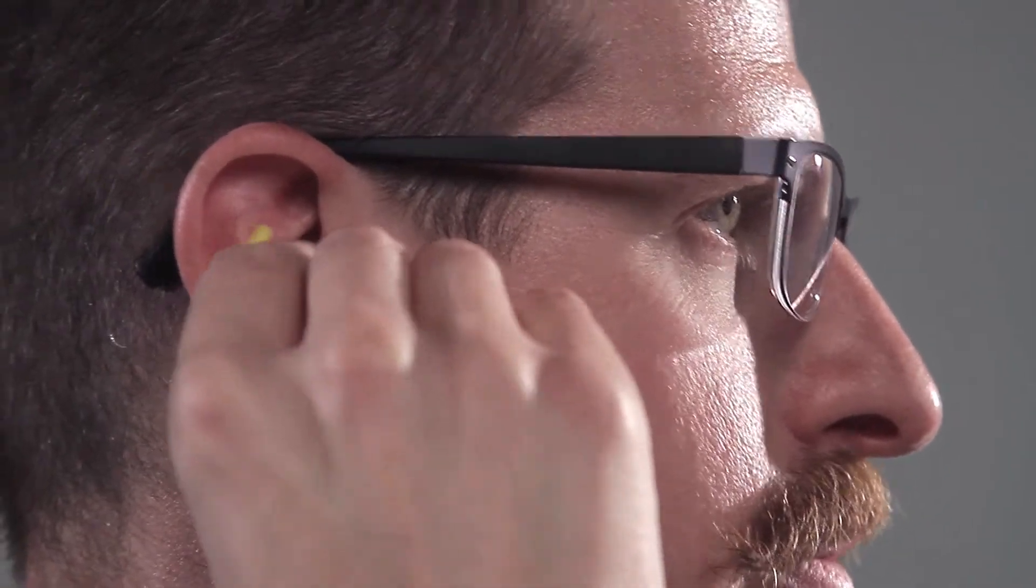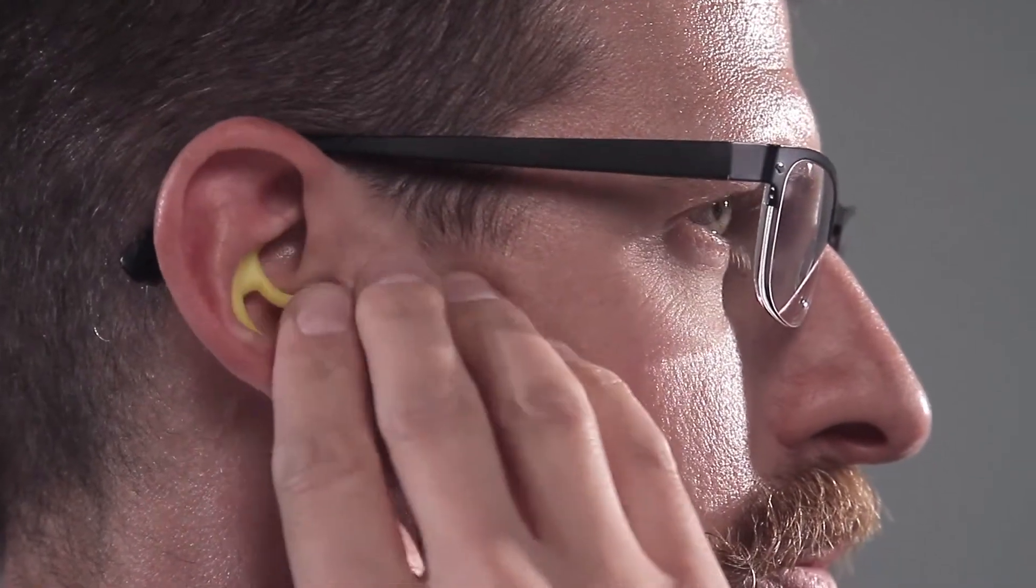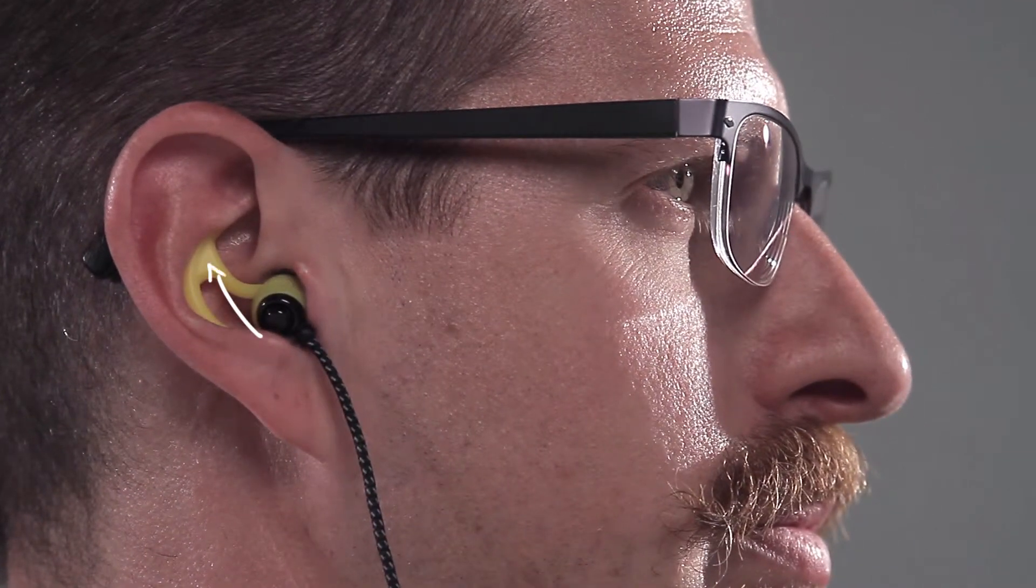Hold the earbud so that the wing is toward the back of your ear. Insert the ear tip into the ear canal. Now push the wing under the upper ridge of the bowl of your ear. That's it!